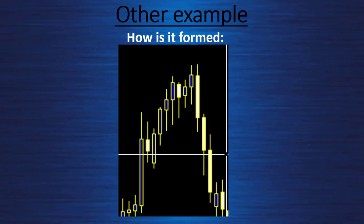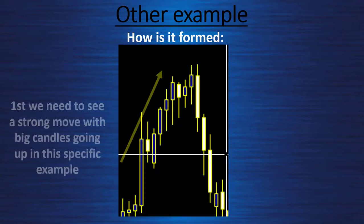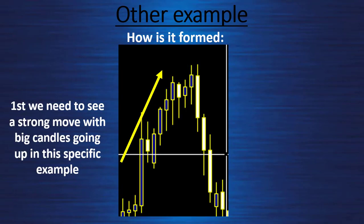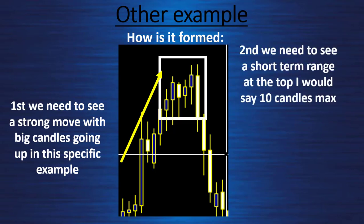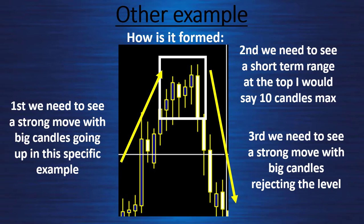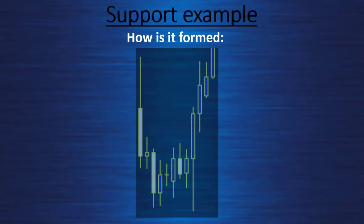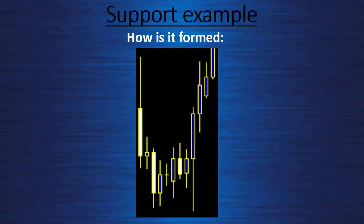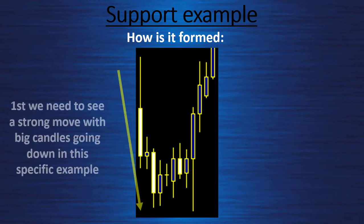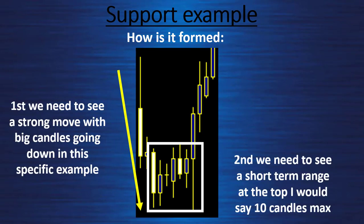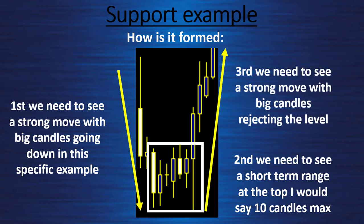Let's look at another example: big blue candles going up, the price goes quite steeply up, a little range at the top, then a strong rejection. And I would say the rejection is more important than the way it goes up. Another example: a big white candle going down to support, a range of less than 10 candles, then a big blue candle going up and leaving the zone very sharply — so this level is confirmed for the next touch.